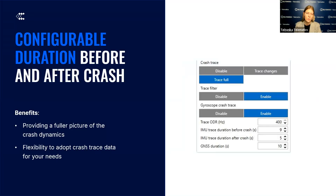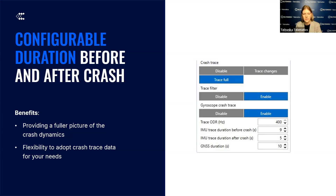With a device that supports a gyroscope, you can configure crash trace duration according to your use case. Configurable crash trace duration can be adjusted as needed, as long as the total duration does not exceed 20 seconds. For example, we can do 5 seconds before the crash and 15 seconds after. The most important information is what happened afterwards, but driving behavior before the accident is also a valuable part of the data.